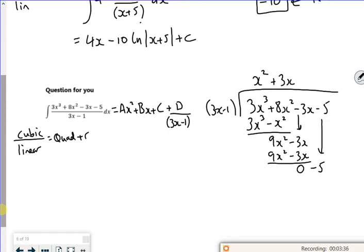How many times does 3x go into minus 5? It doesn't. So I'm kind of stuck there now. And this is my remainder. So what I'm saying is that my a is 1, my b is 3. Oh look, there's nothing there for c. My c is 0.